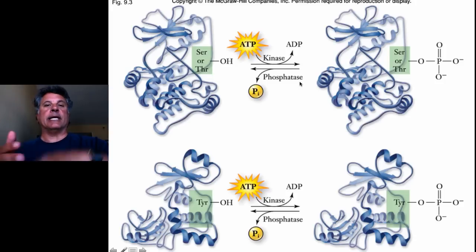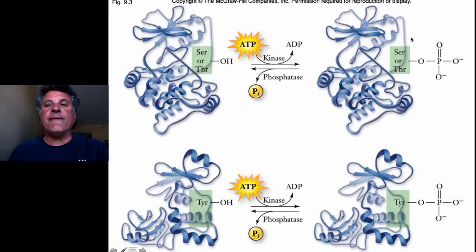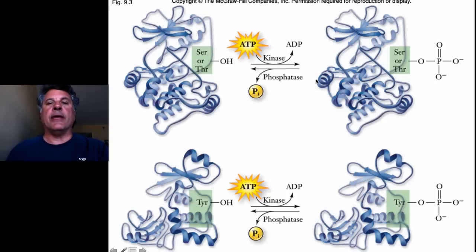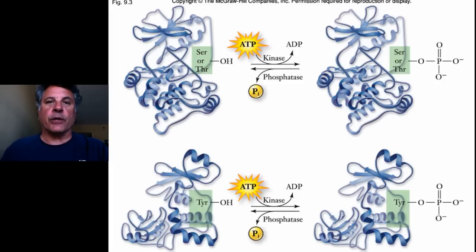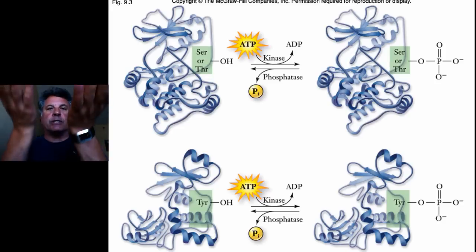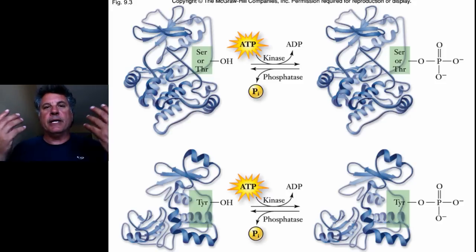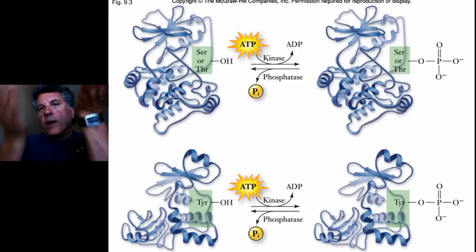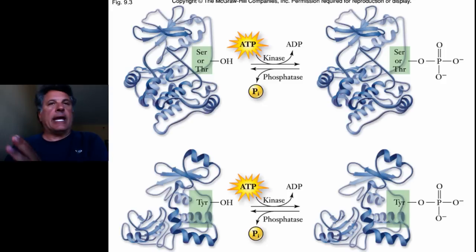As a yin to the yang of kinases, there are phosphatases. Phosphatases catalyze the opposite reaction — they dephosphorylate target proteins, removing a phosphate group as an inorganic phosphate, producing a non-phosphorylated protein at serine or threonine residues. For any protein capable of being phosphorylated, there exists a phosphorylation state in the cell — a balance between the phosphorylated and unphosphorylated states. Disruption of that homeostasis can lead to over-activation or inhibition of that protein, eliciting a cellular response.